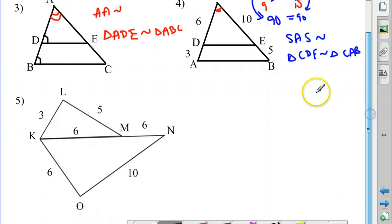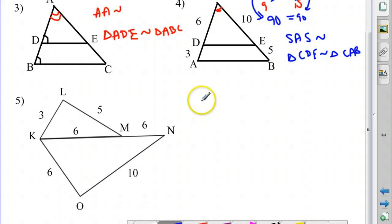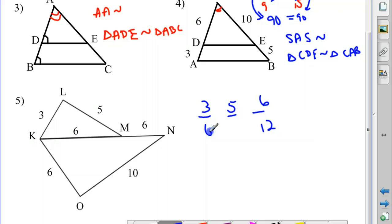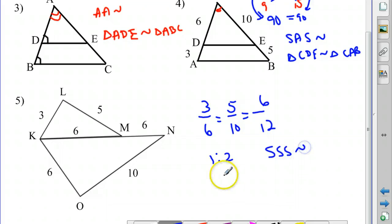Let's take a look at this last example. I don't know anything about the angles — I just have information about the sides. So let's see if the three pairs of sides are in the same ratio. In the smaller triangle, the sides are 3, 5, and 6. In the larger triangle, listing sides from smallest to largest, we'd have 6, 10, and then 12 — adding lengths KM and MN to get the total length of 12. It's very easy to see that each fraction reduces to 1 to 2, so our scale factor is 1 to 2, and yes — these triangles are similar by side-side-side similarity.